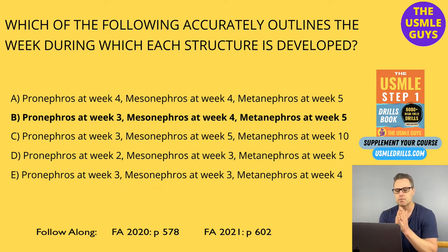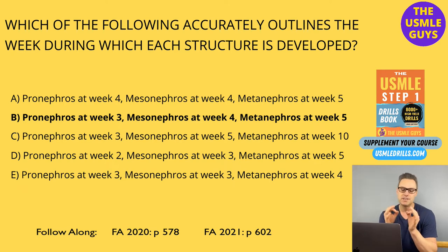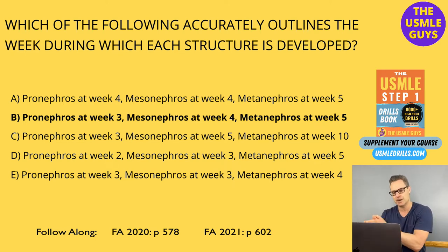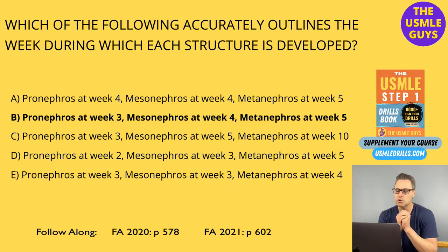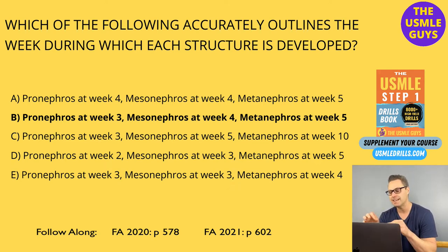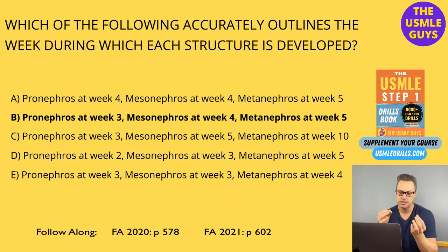During development, we see three stages. We have the pronephros, seen during the third week of development, but it then degenerates — this is a non-functional structure. During the fourth week, we see the mesonephros, which acts as a temporary kidney during the first trimester of development, remaining functional only for a short period of time, but it does remain as the Wolffian duct. So as opposed to the pronephros, which degenerates, the mesonephros sticks around as our Wolffian duct.